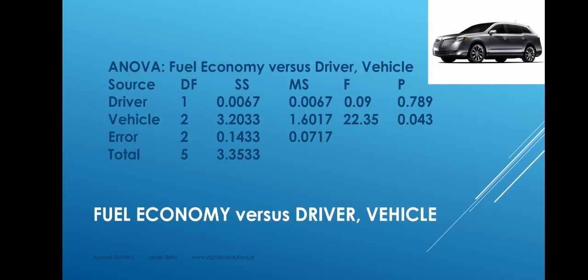The ANOVA table has the familiar headings but has two p-values, one for each factor. The p-value for vehicle is less than 5%, so we reject the null hypothesis that vehicle has no effect on fuel economy in favour of the alternative — vehicle does have an effect on fuel economy; in fact, SUVs tend to use more fuel. The p-value for driver is greater than 5%, so we accept the null hypothesis that driver has no effect on fuel economy.